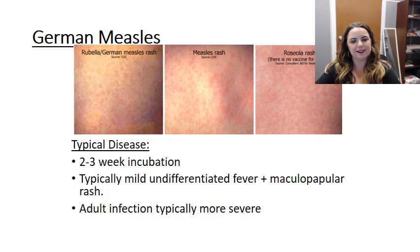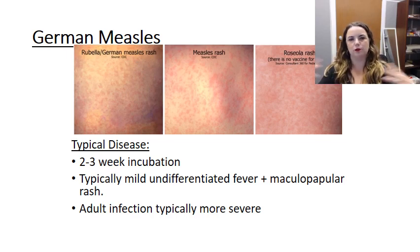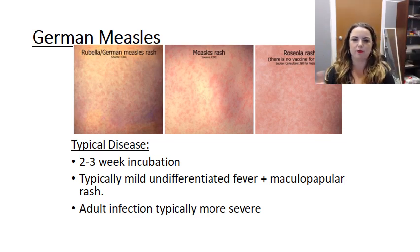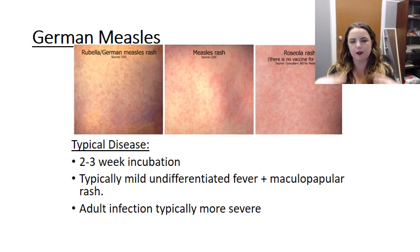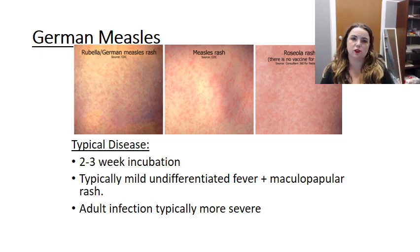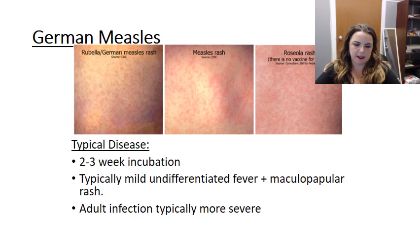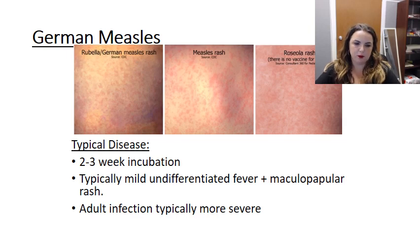For rubella, adult infection can actually be more severe and include larger body problems such as arthralgia and arthritis. Occasionally you'll see thrombocytopenia or post-infectious encephalopathy. But the real patient we're concerned about with rubella or German measles is the fetus, because that is the patient most at risk.